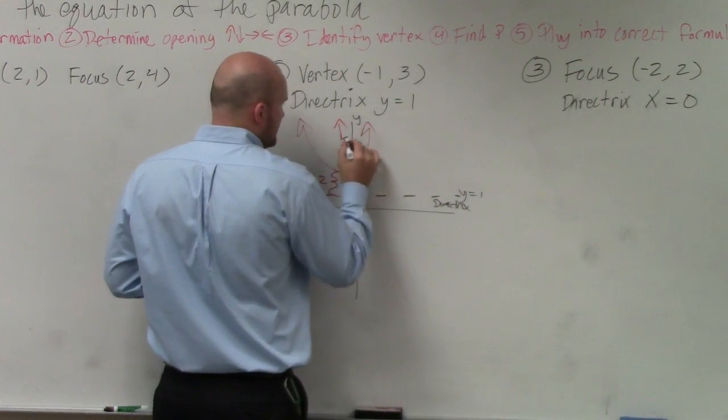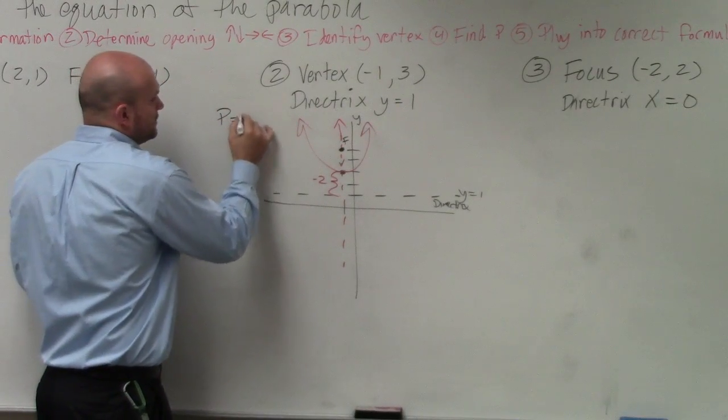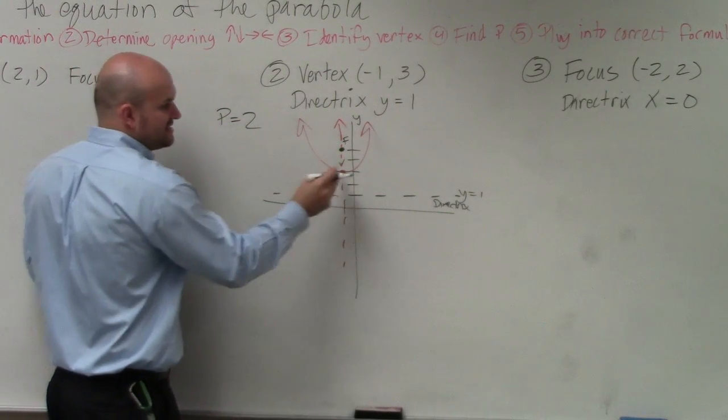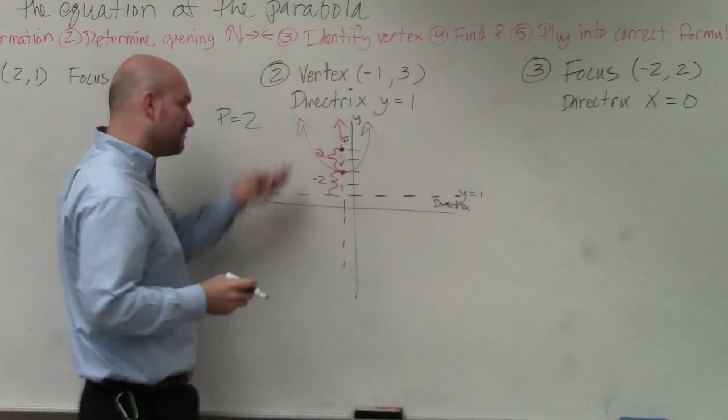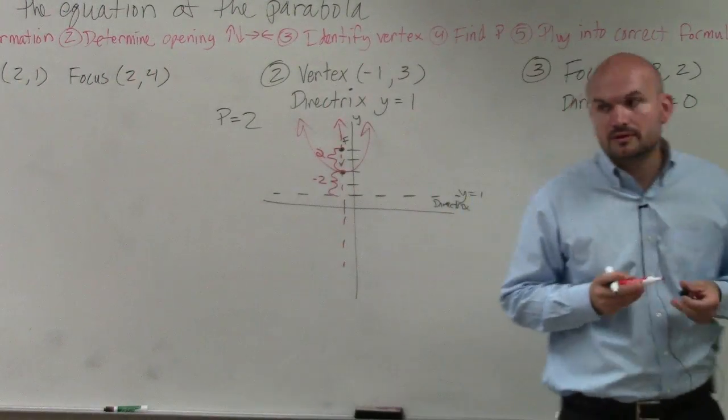So that means the distance going up is going to be positive 2. So that's my new focus. So I can say p is equal to 2, because the distance going up is 2. And I'm going down for my directrix. OK?